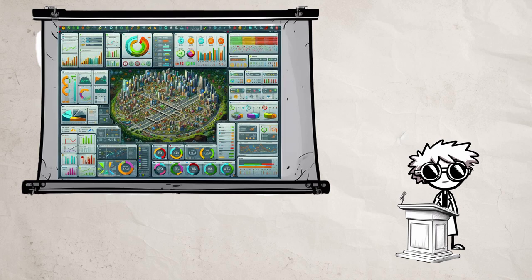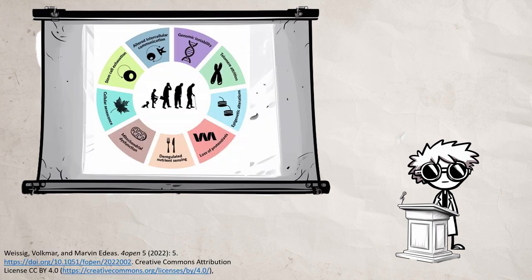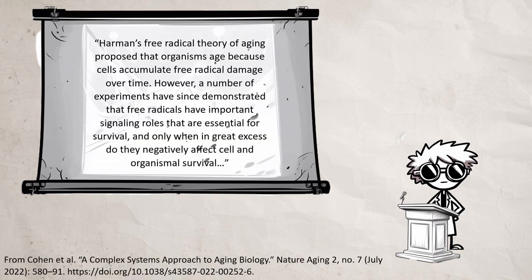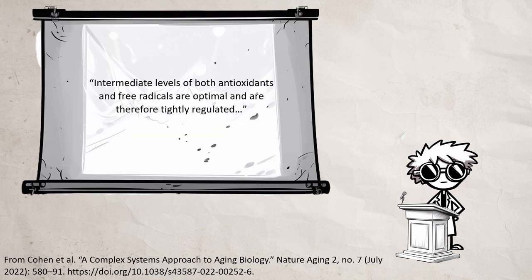Aging is a phenomenon that emerges from all these biological parts interacting. To solve it, we're going to need to understand how those parts interact and what happens when we perturb them. Here's a quote from a review article about the systems biology of aging. Harmon's free radical theory of aging proposed that organisms age because cells accumulate free radical damage over time. However, a number of experiments have since demonstrated that free radicals have important signaling roles that are essential for survival and only when in great excess do they negatively affect cell and organismal survival. Intermediate levels of both antioxidants and free radicals are optimal and therefore tightly regulated.